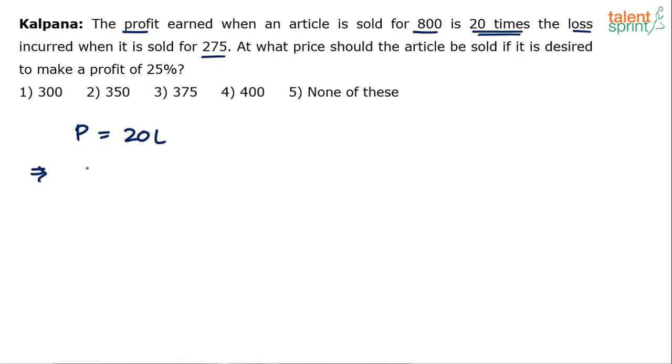What is P? Profit is selling price minus cost price. Selling price is 800 in case of profit. Cost price let's assume is C, equals to 20 times the loss. Loss is cost price minus selling price. The selling price is 275. Substitute the selling prices properly. In the case of loss the selling price is 275. In case of profit the selling price is 800.